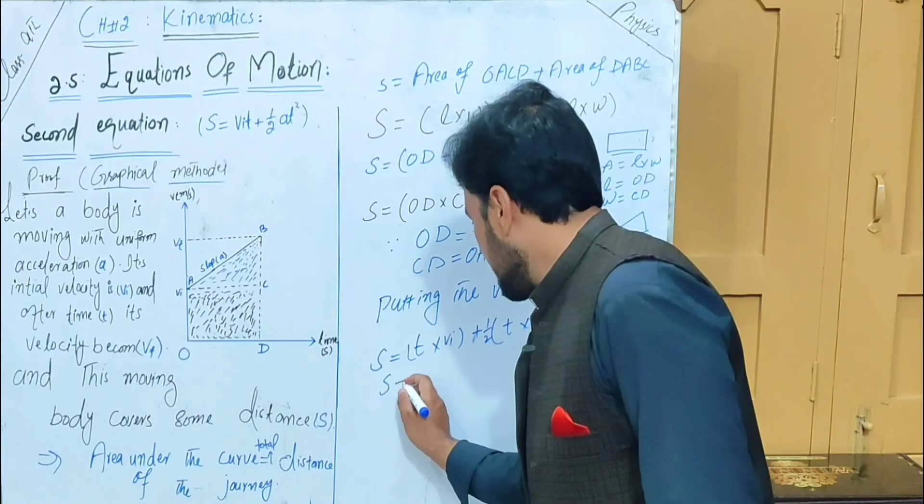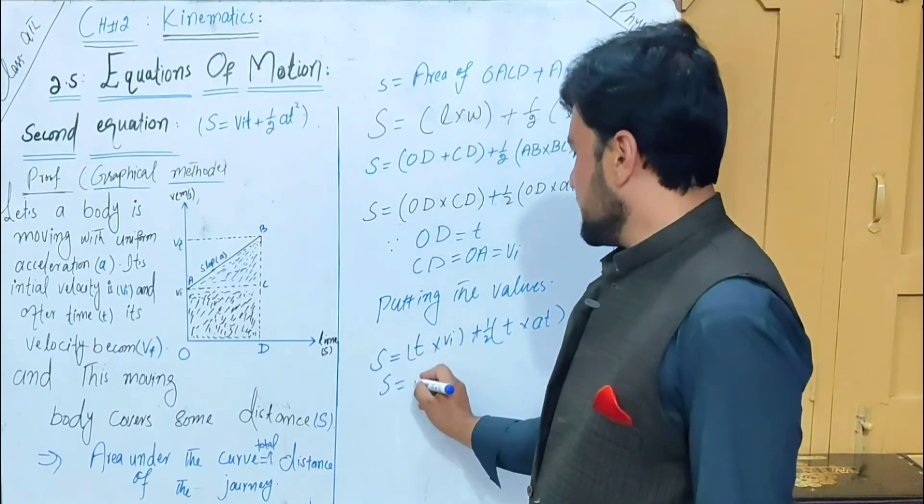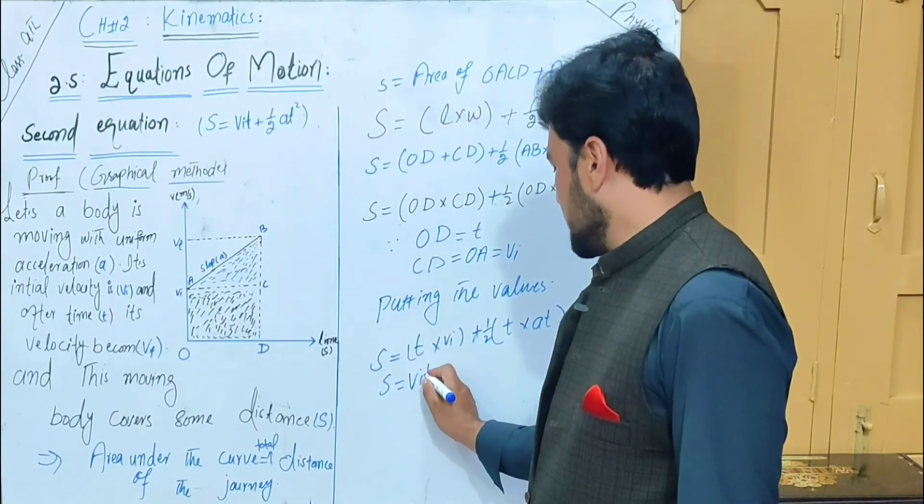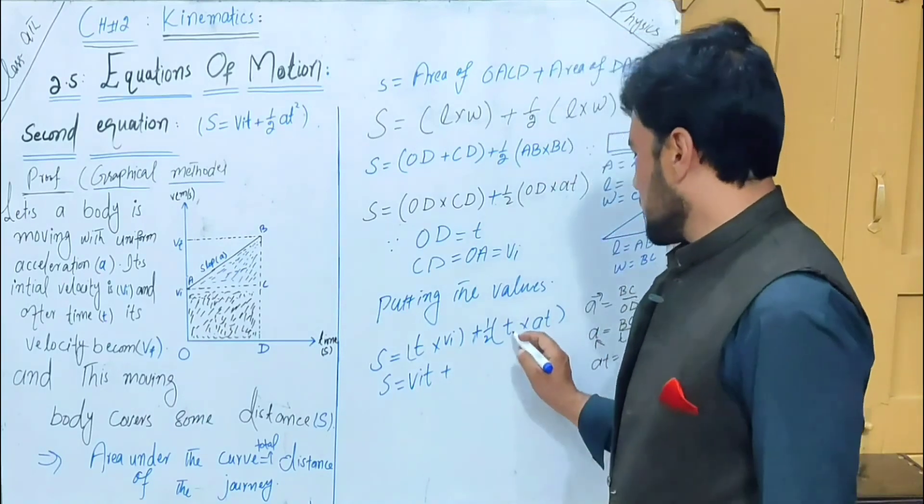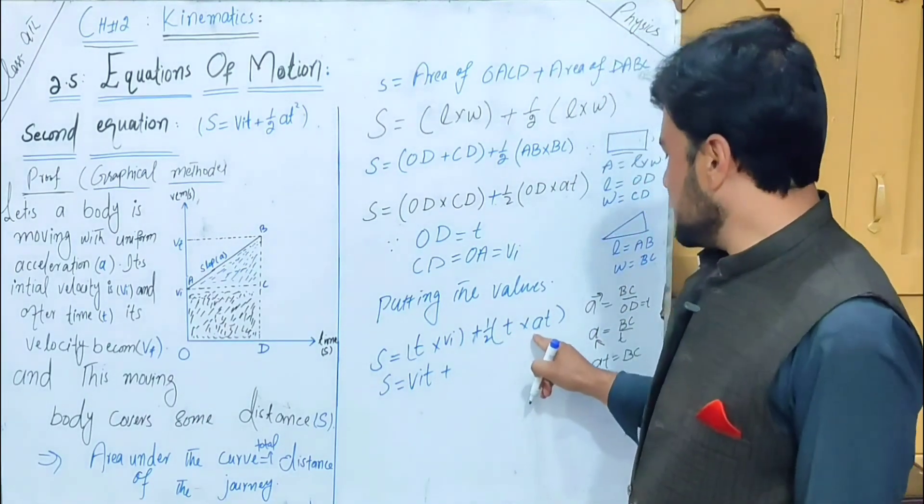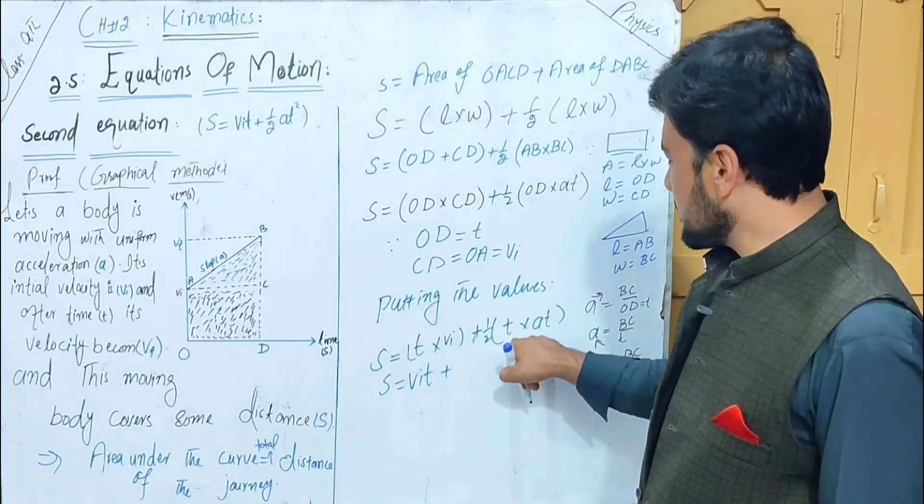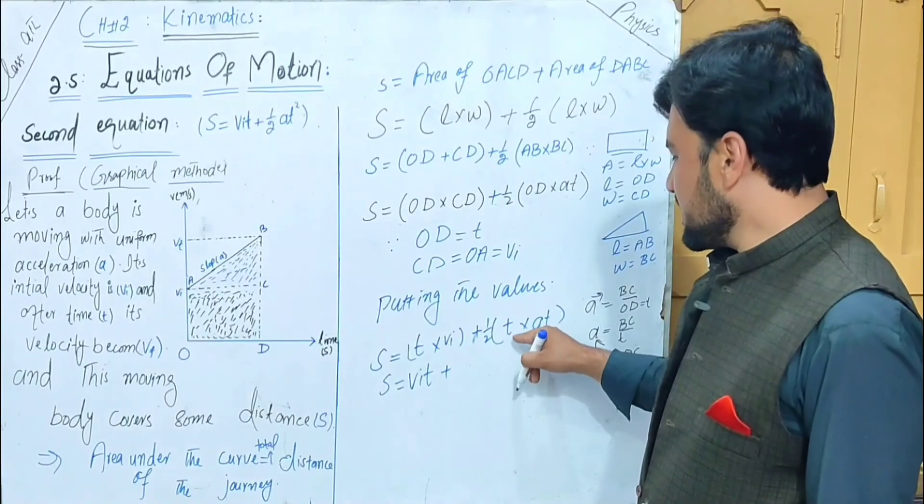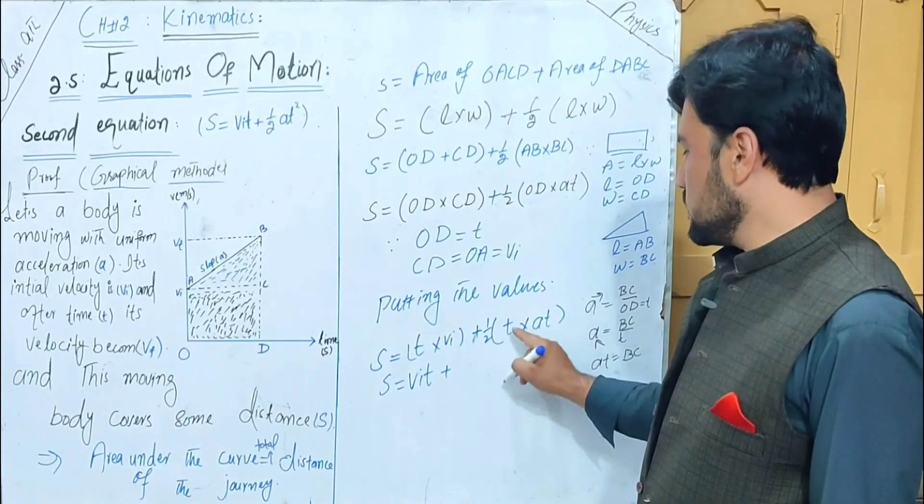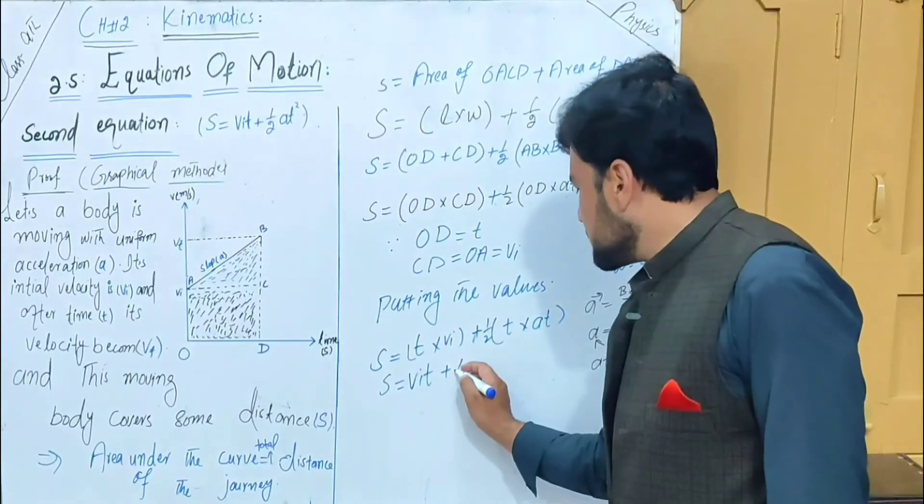Now s equals t times v_i plus one half—t times at becomes half at squared, because the power becomes two.